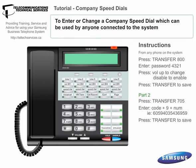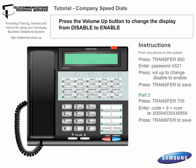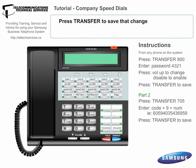To enter or change the company speed dial, which can be used from any phone on the system, press Transfer 800, enter the password 4321, press the volume up arrow to change Disable to Enable on the telephone screen, and press Transfer to save that change.